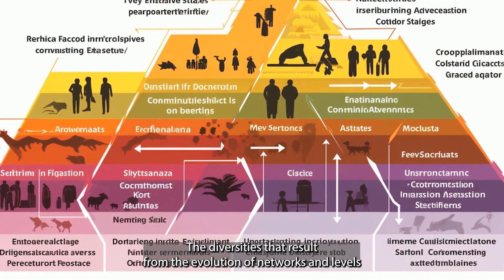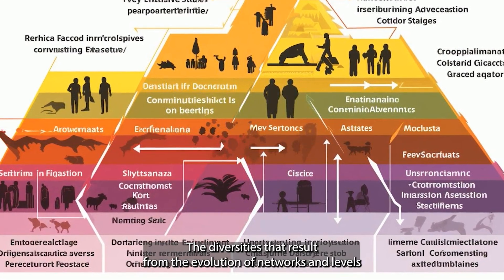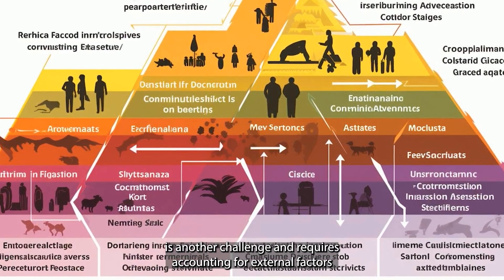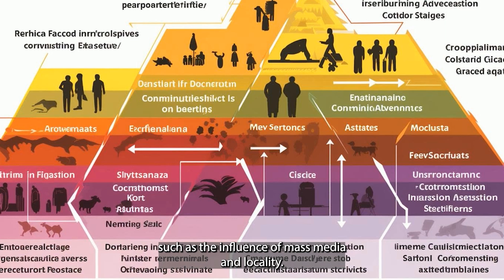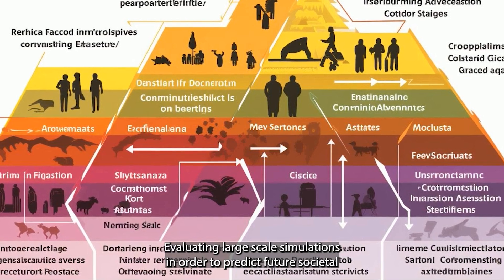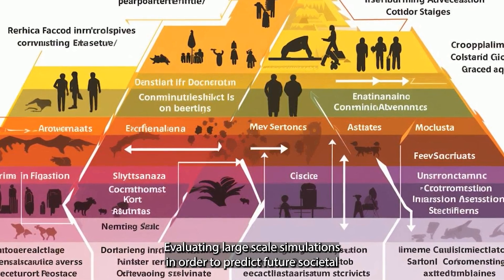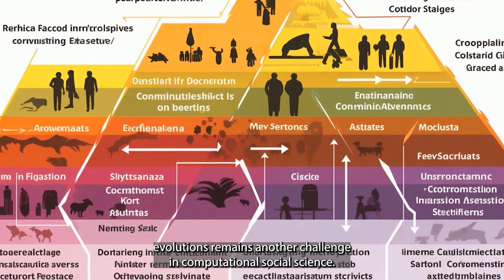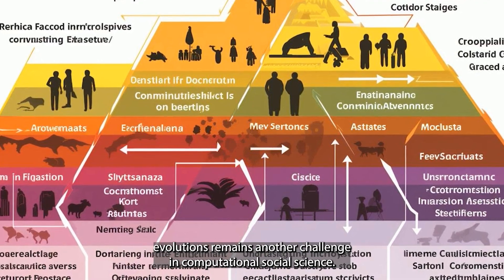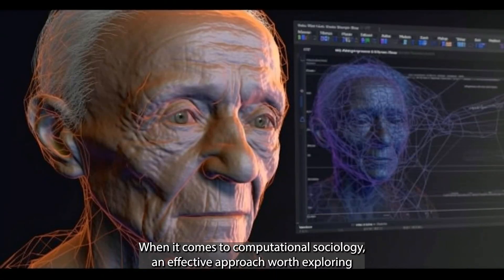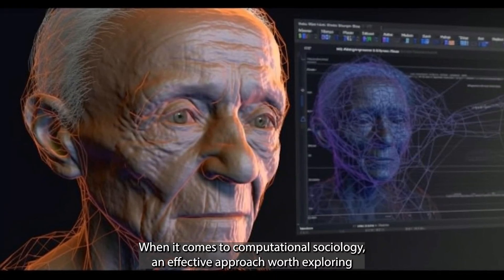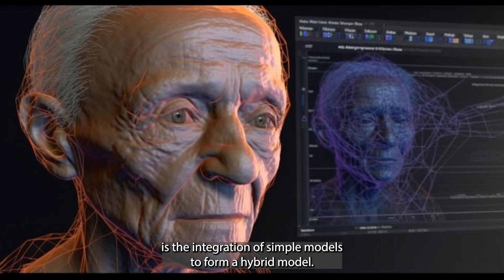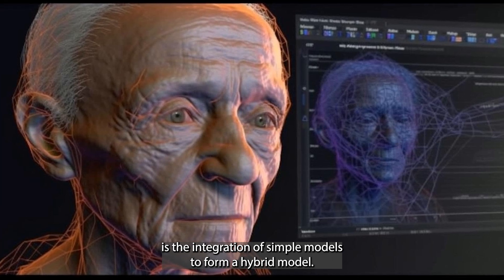Modeling the diversities that result from the evolution of networks and levels is another challenge, and requires accounting for external factors such as the influence of mass media and locality. Evaluating large-scale simulations in order to predict future societal evolutions remains another challenge in computational social science. An effective approach worth exploring is the integration of simple models to form a hybrid model.